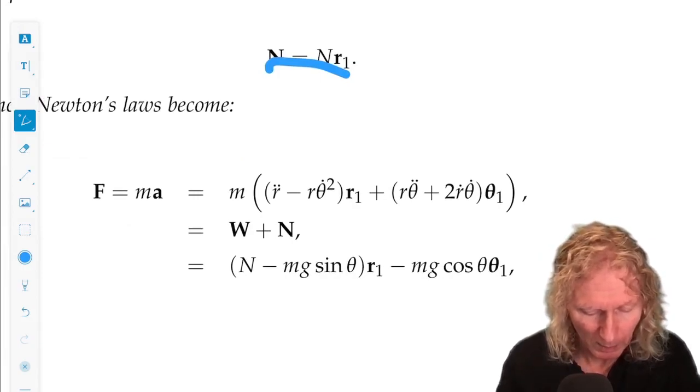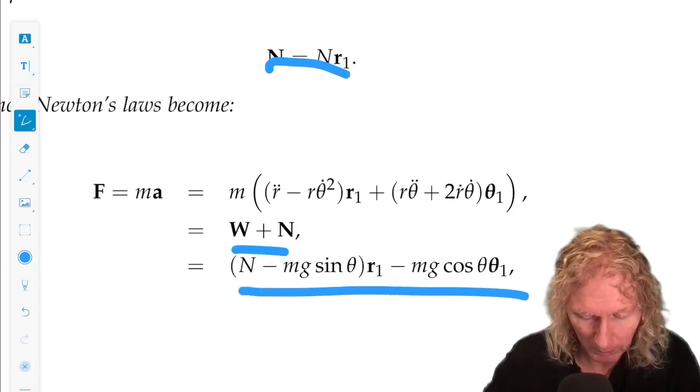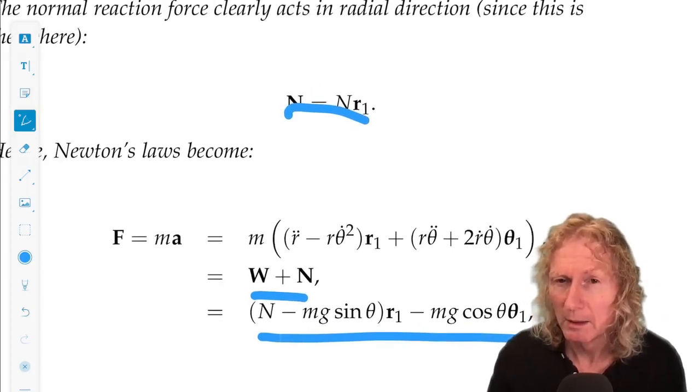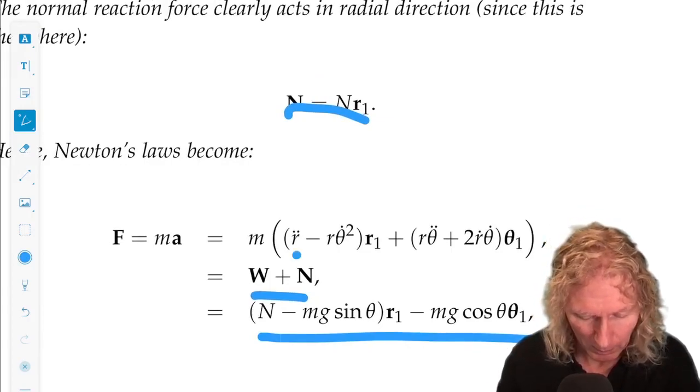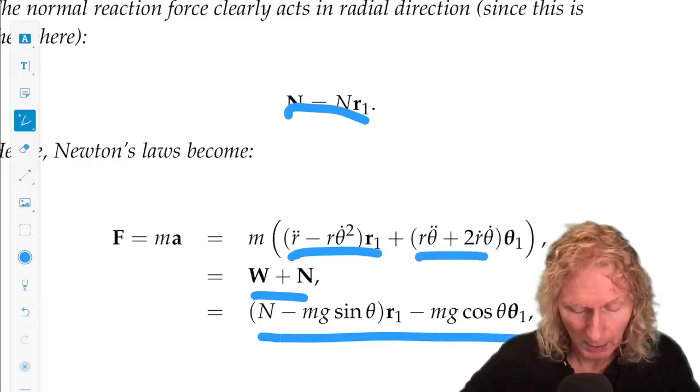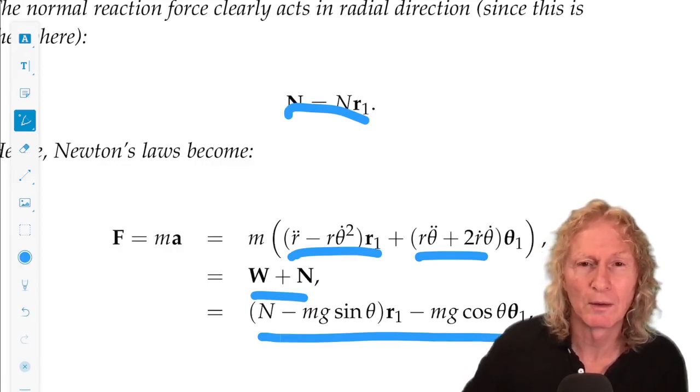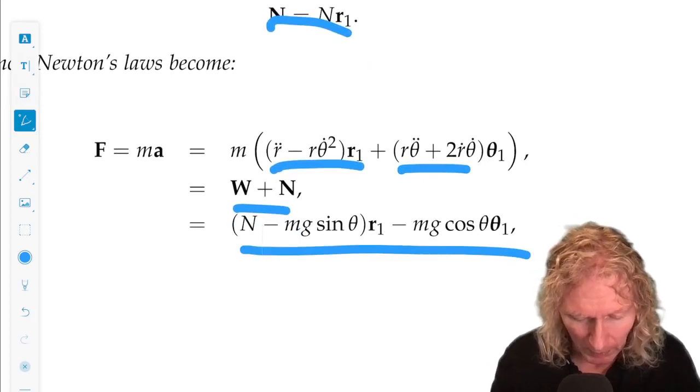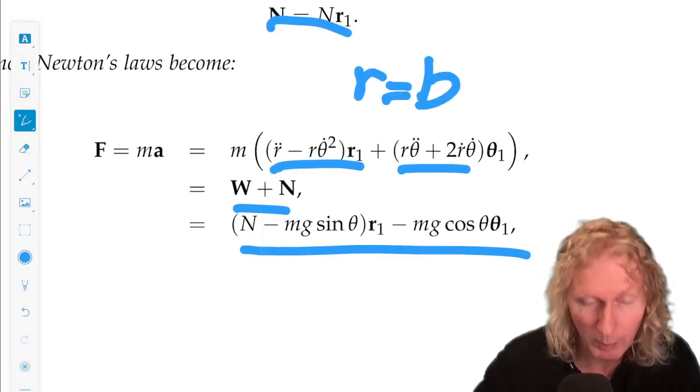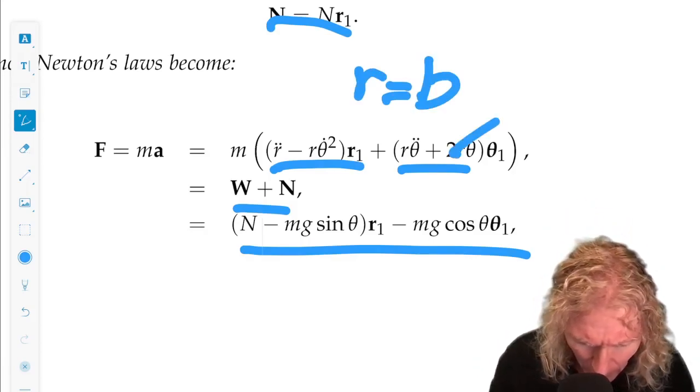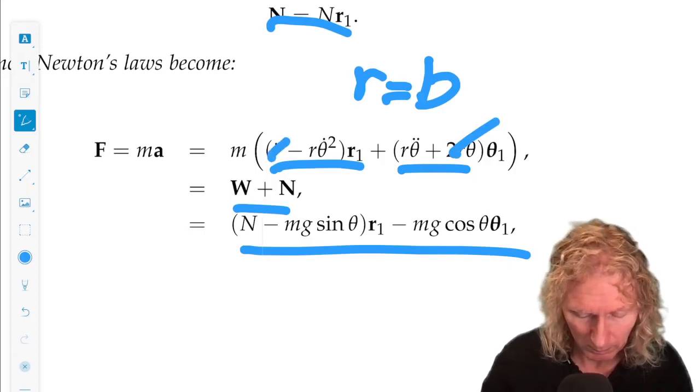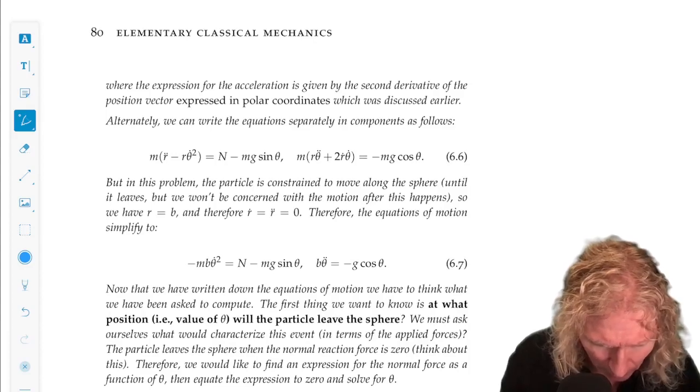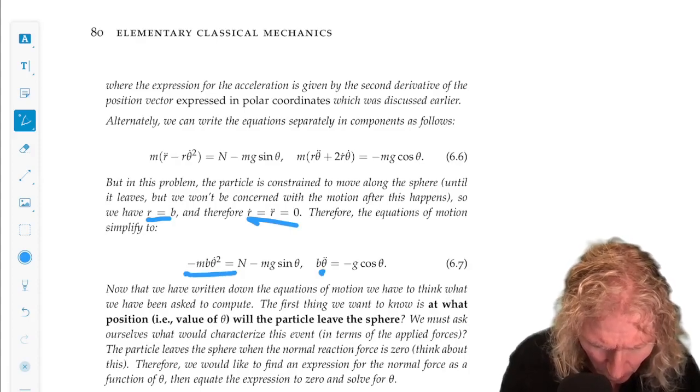So we have F equals MA. F is W plus N, and that's putting the two expressions together, writing them in the R1 and theta 1 direction. And A is just the second derivative of the position vector expressed in the polar coordinates. Now, something we're going to see is that R equals B for this problem, the radius, and B doesn't change in time. So this is going to go away in this expression. And I've written it out in components here. These are the two equations of motion.